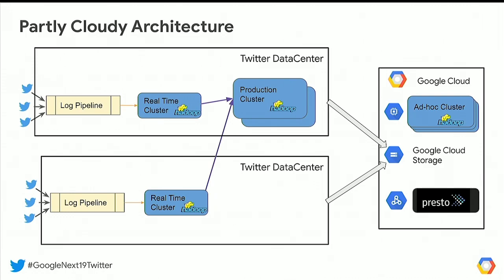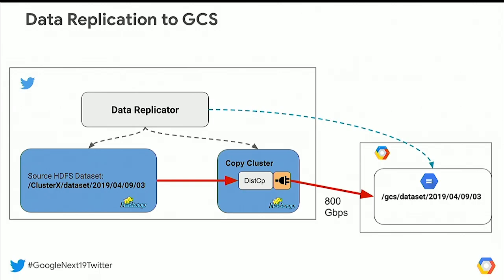Presto has a Dataproc logo next to it — is that what you're using to run Presto? Yes, that is correct. We've run our Dataproc with about 90,000 cores. That's the largest Dataproc cluster that has ever been launched for public customers as far as we know. And we'll launch even larger clusters soon.